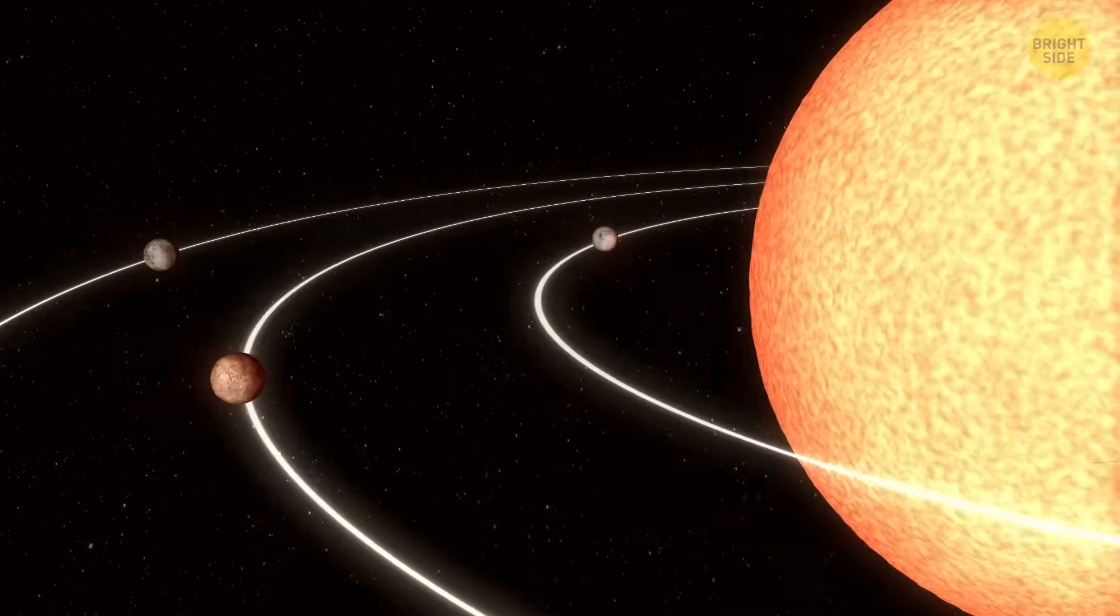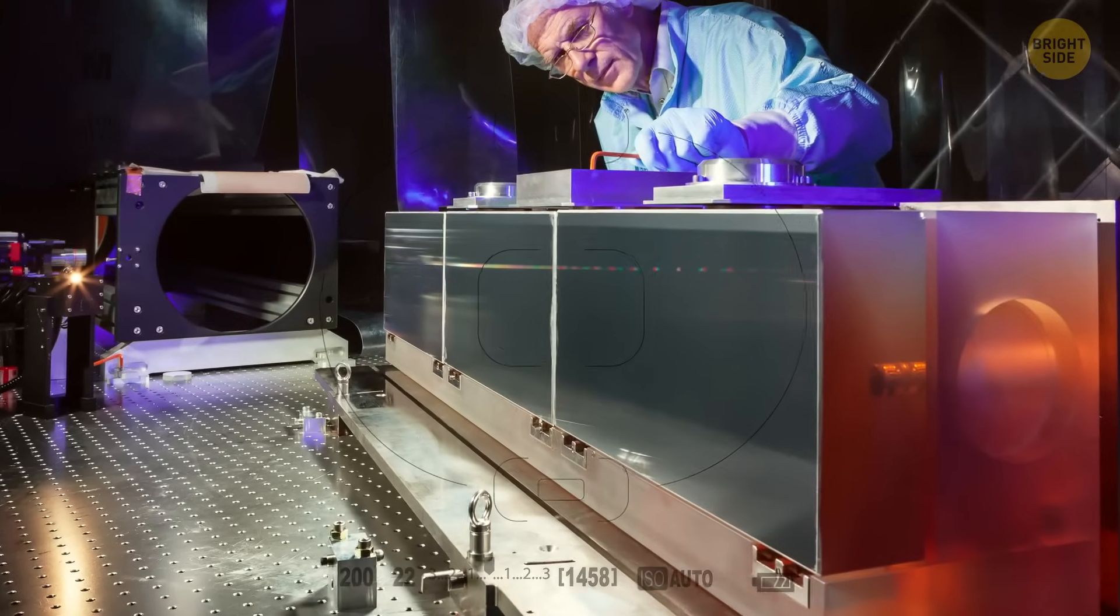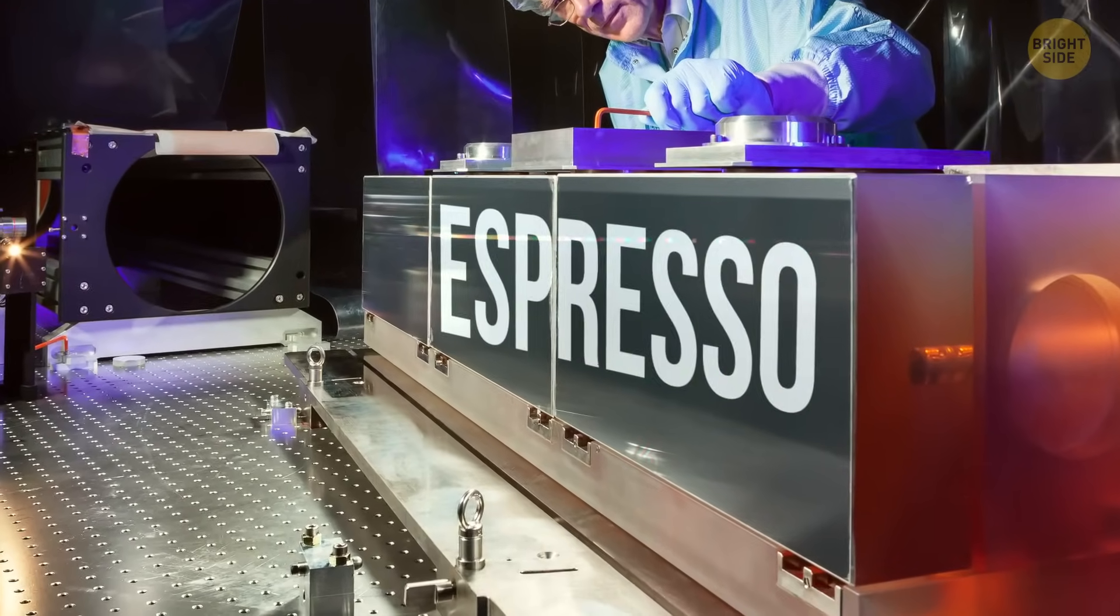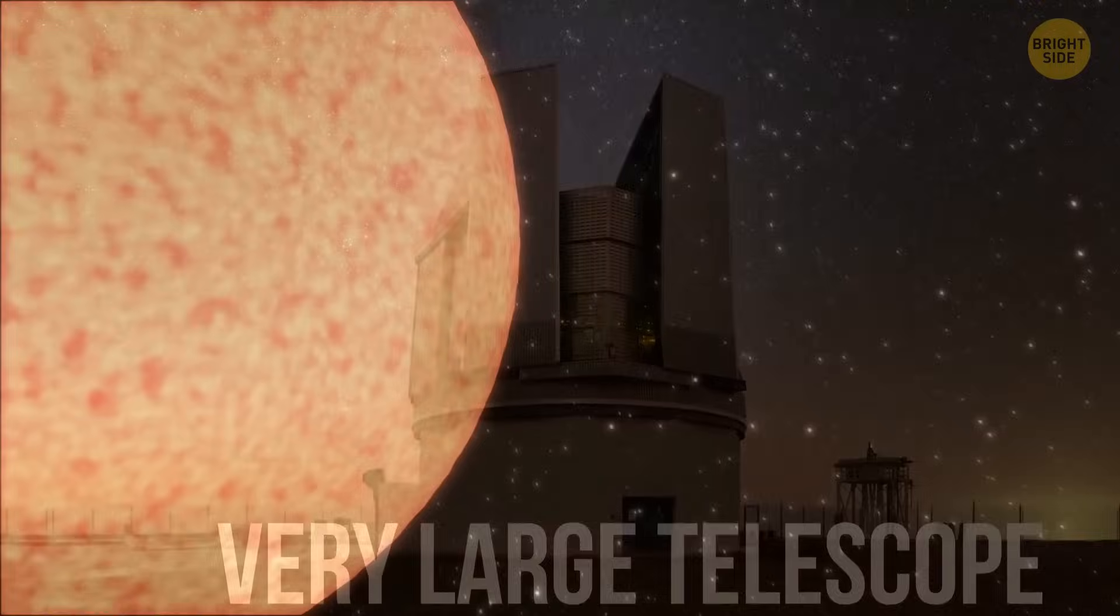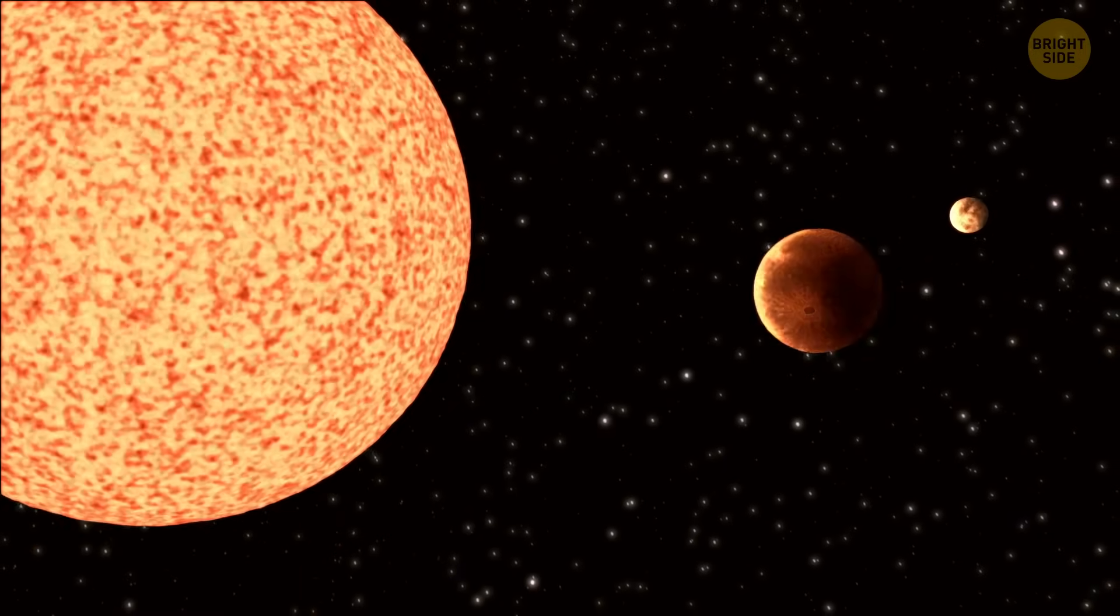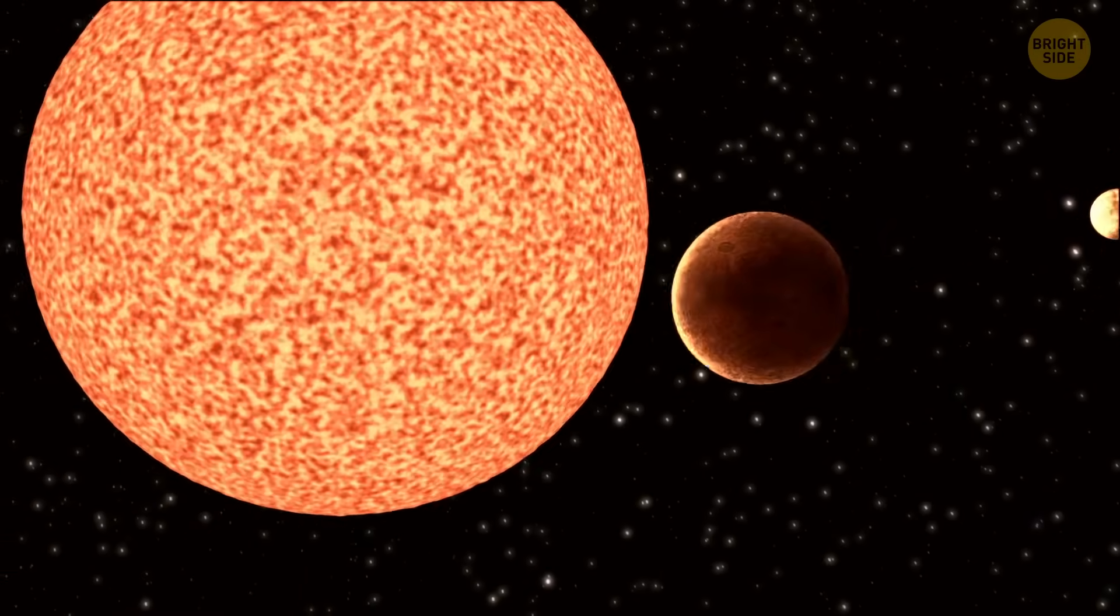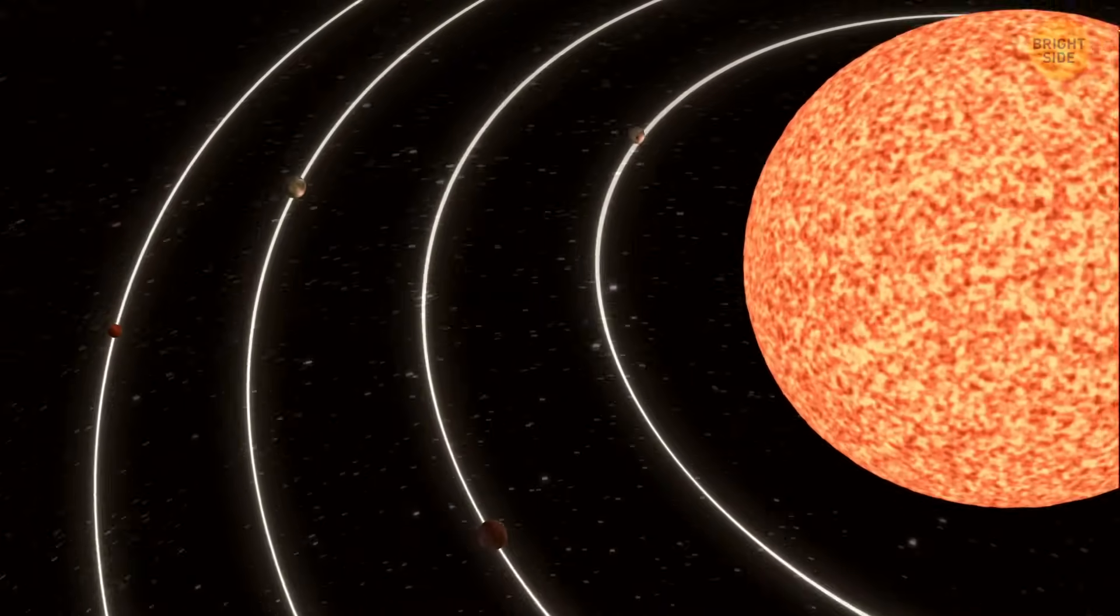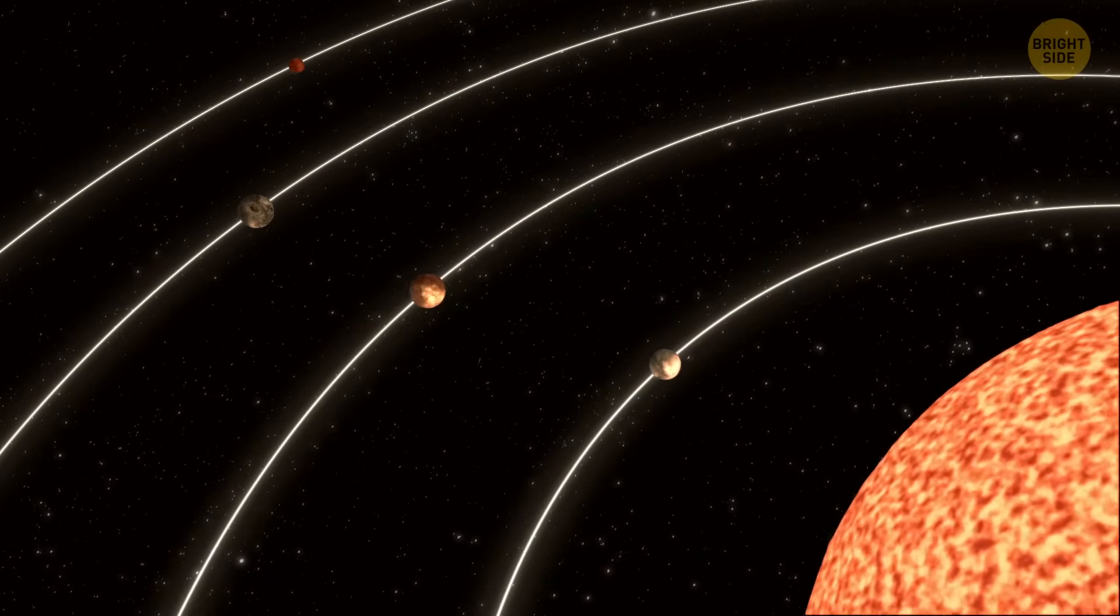At first, they found three planets. But then they used another device, deliciously called ESPRESSO, located at the Very Large Telescope in Chile. And only after a shot of this ESPRESSO did they find a fourth planet. By combining the data from both instruments, they were able to more or less confidently say their findings were solid, not just random glitches in the data.